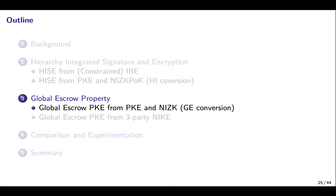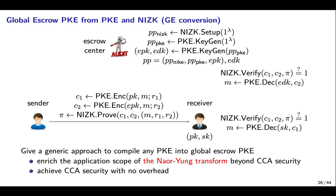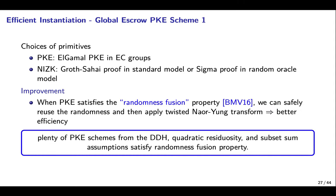We present two generic constructions of global escrow PKE. Our first construction is from any PKE using an equality of secret key proof (ISK proof). The escrow sender simply generates a key pair. To encrypt plaintext M, encrypt it under the receiver's public key and the escrow sender's public key respectively, then append an ISK proof to prove that the two ciphertexts encrypt the same plaintext. This is a new application of the Naor-Yung transform beyond CCA security, giving a generic approach to compile any PKE to global escrow PKE. For instantiation, we realize PKE with ElGamal in EC groups and ISK proof with GRS-DLEQ proof and Sigma proof. When PKE satisfies the randomness fusion property, we can safely reuse randomness and apply a twisted Naor-Yung transform.